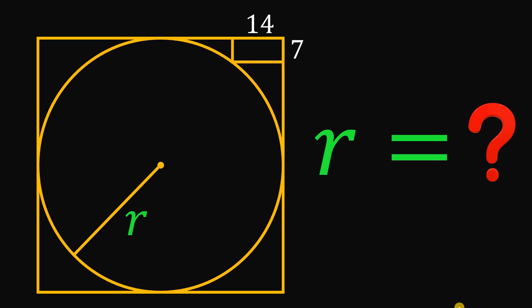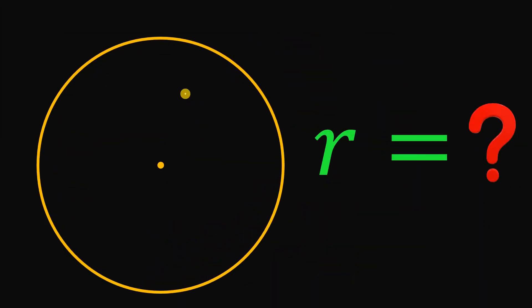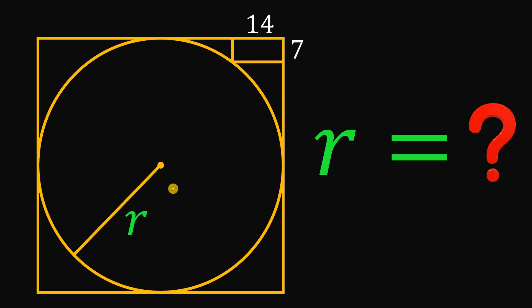For today's video, we will answer a geometry challenge given by one of our followers. The question goes like this: start with a circle, then draw a square that is tangent to the circle. On the upper right corner, draw a rectangle with side lengths of 7 and 14 units. The question is to find the length of the radius, r.